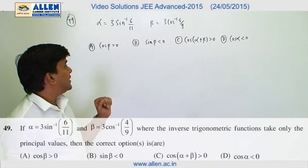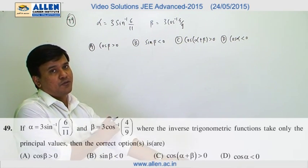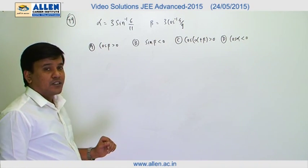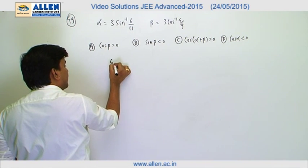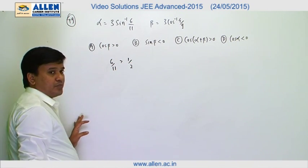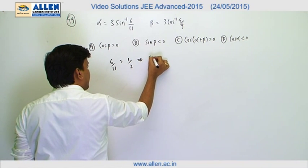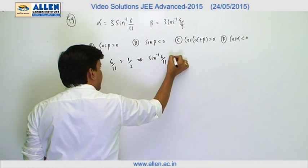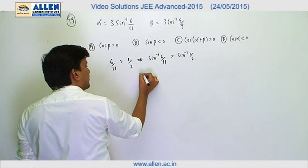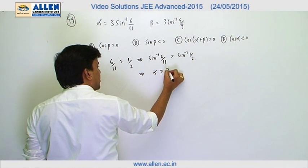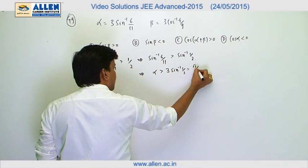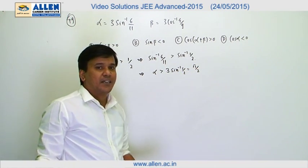In question number 49, alpha is given as 3·sin⁻¹(6/11) and beta as 3·cos⁻¹(4/9), and we have to select the correct option. For alpha: since 6/11 > 1/2, and sin⁻¹ is an increasing function, sin⁻¹(6/11) > sin⁻¹(1/2) = π/6. Multiplying by 3, alpha > π/2, so alpha is slightly greater than π/2.